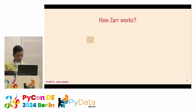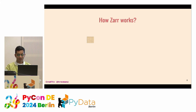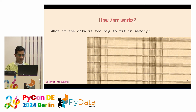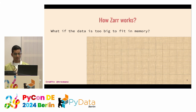If you have a dataset small enough to load into memory, store in memory, and make changes to — like 100 megabytes — it's fine. But what if the data gets too big, like 1000 gigabytes? You won't be able to load it, store it, or make changes to it. That's where Zarr kicks in.